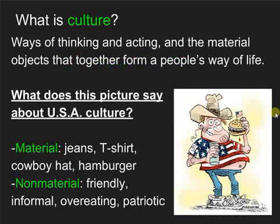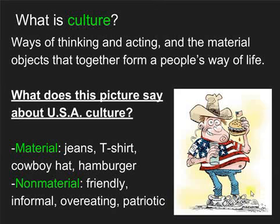So what is culture? It's all of the ways of acting and even the ways of thinking, behavior and thought, and even material objects that together form our way of life or any people's way of life. Here we have someone's depiction of what a stereotypical American looks like, and I'm assuming this is someone who's not from American culture themselves. You can see some of the material aspects of our culture: jeans, cowboy hats, t-shirts, hamburgers, and some non-material aspects — the friendly smile, the overeating lifestyle perhaps, the patriotism, the informality.